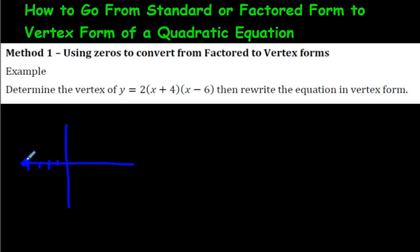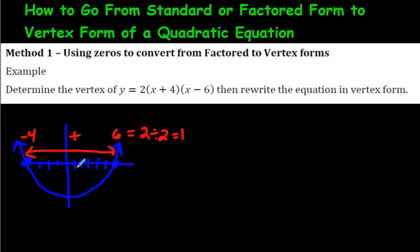The two x-intercepts or zeros are negative 4 and positive 6. We know it's a parabola opening upwards because the value of 2 in the front is positive. To find the vertex, find the middle between these two zeros. We've got negative 4 and 6. To find the middle, add them and divide by 2. Negative 4 plus 6 equals 2, and if you divide that in half, you get 1. That means our vertex x value is 1.